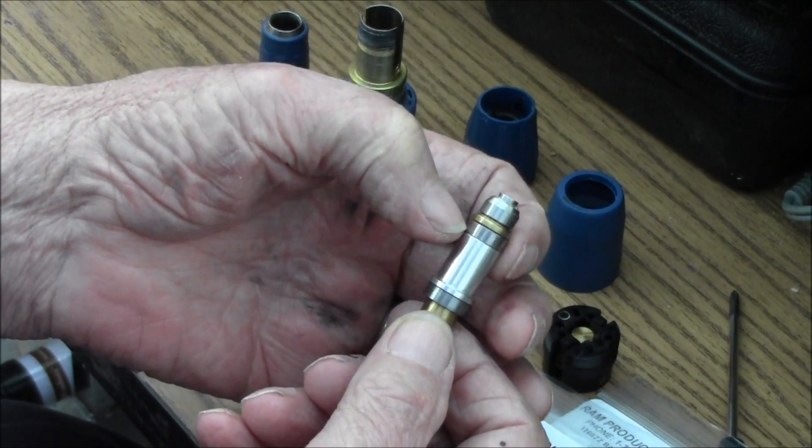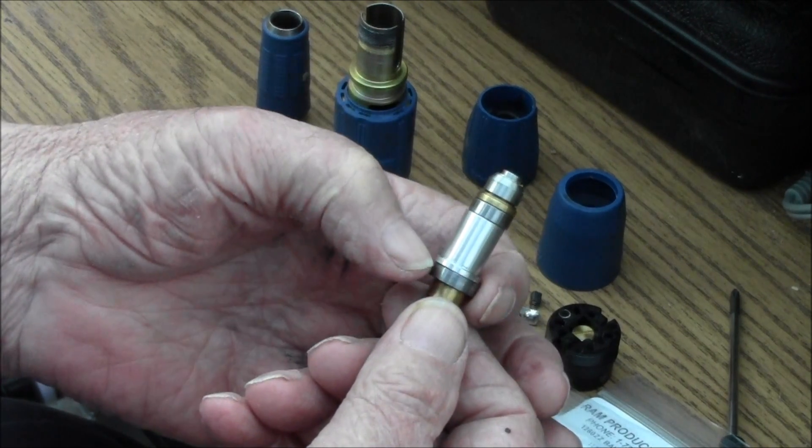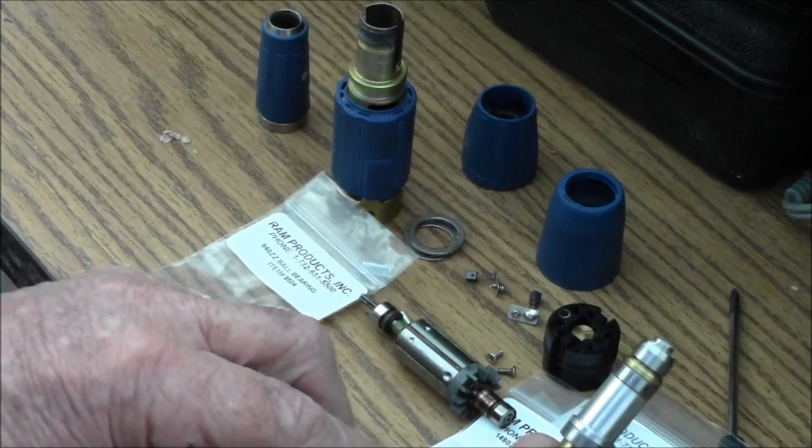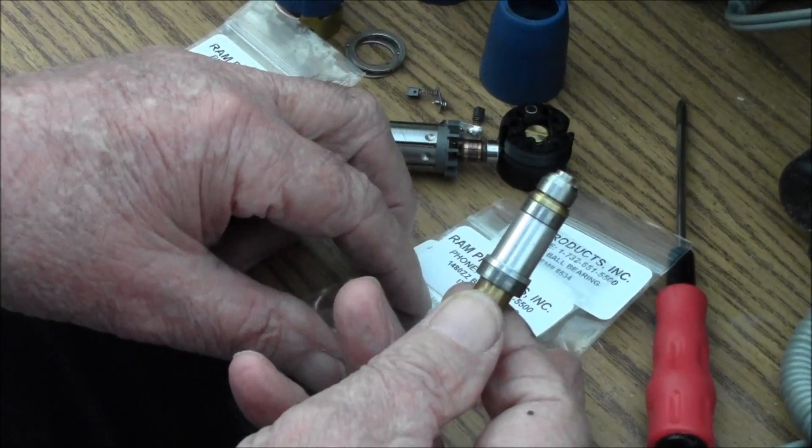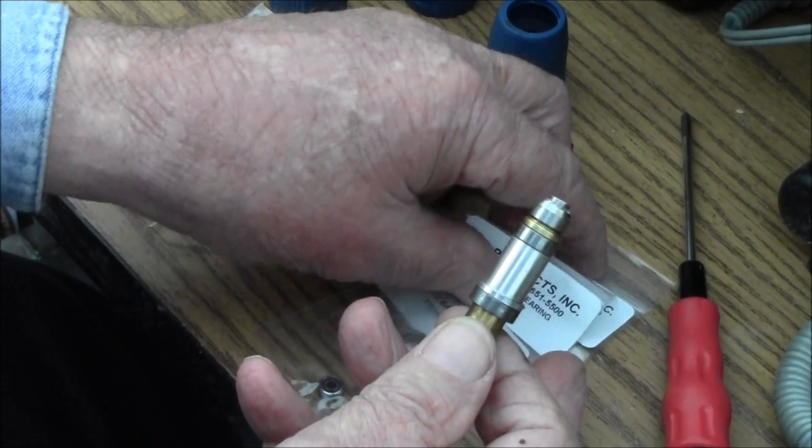That's your 1480 and your 1280 bearings. To replace those, there's a little C-clip right here that you would have to take off.